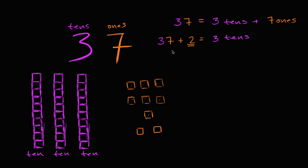So let me write that down. So plus 9 ones, or another way to think about it is 37 plus 2 is equal to 3 tens. So I could write this as 30 and then 9 ones is equal to 39. And that's exactly what we have here. We have 30, this is the 3 tens. And then we have 9 ones, which is 39.